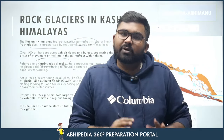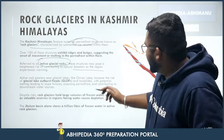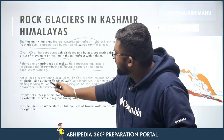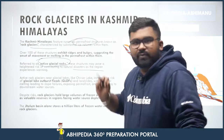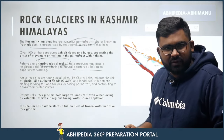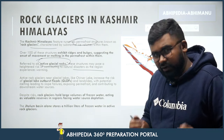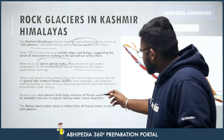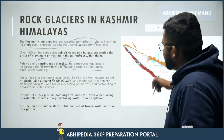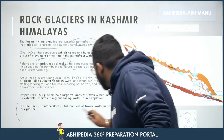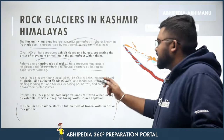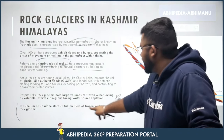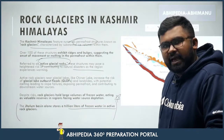Because water flows, but if it is stored it can accumulate. Once that accumulation is released, we can have GLOF — Glacial Lake Outburst Floods — as well as flash floods. That is why this is so important. The GLM basin alone stores trillions of liters of frozen water in active rock glaciers.